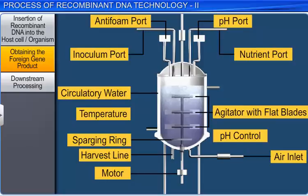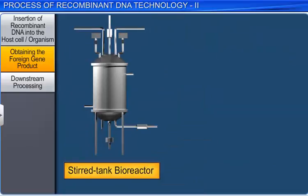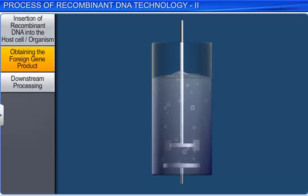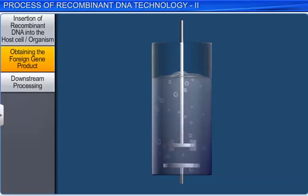Another type of bioreactor is the one with a sparged stirred tank. Sterile air bubbles are sparged through this reactor, which increases the surface area for oxygen transfer. Once the biomass has been obtained from the bioreactor, the final step in recombinant DNA technology is downstream processing.